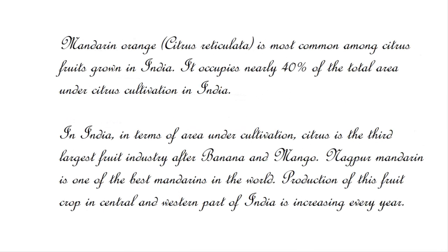Mandarin orange, citrus reticulata, is the most common among citrus fruits grown in India. It occupies nearly 40% of the total area under citrus cultivation in India. In terms of area under cultivation, citrus is the third largest fruit industry after banana and mango.